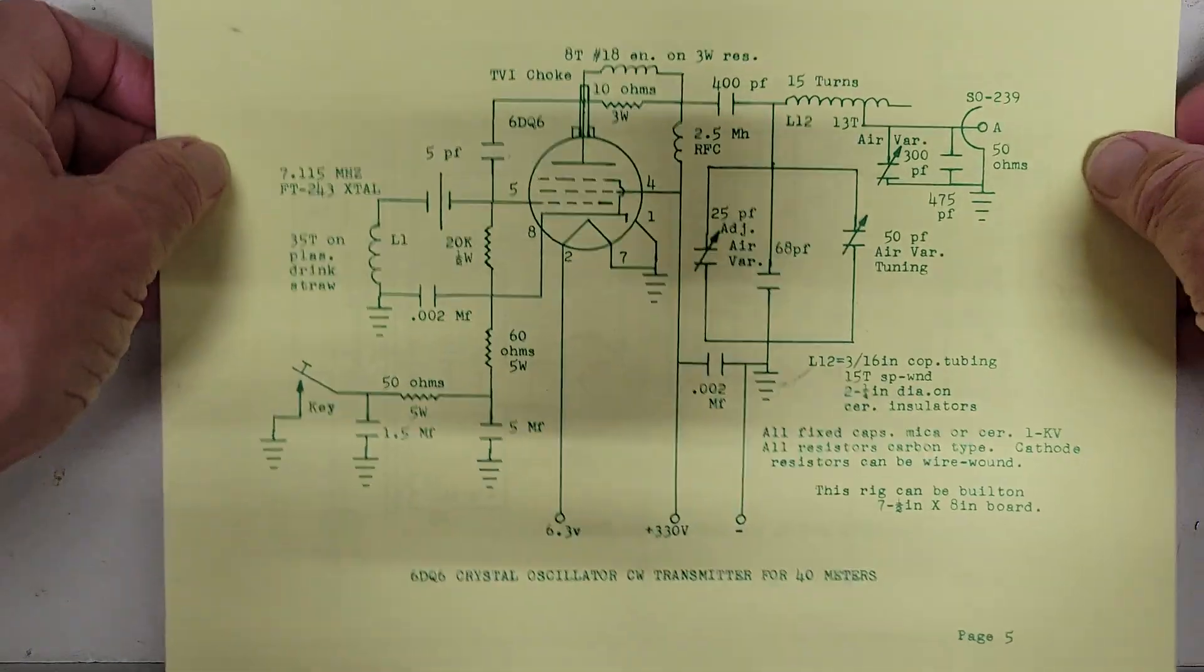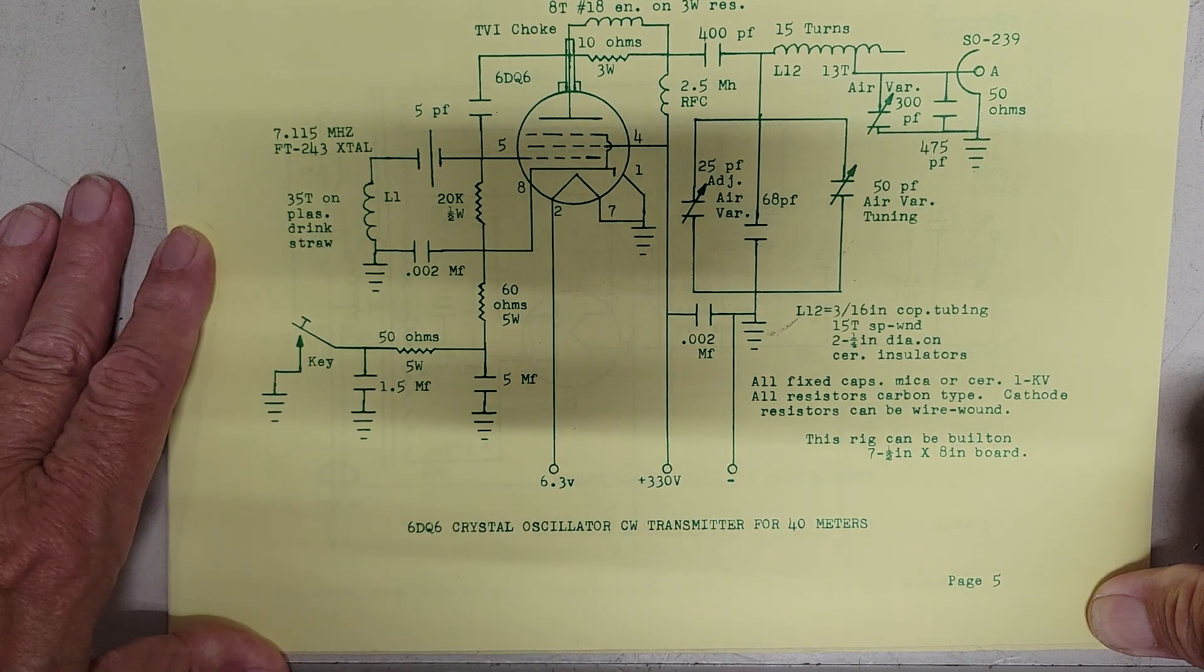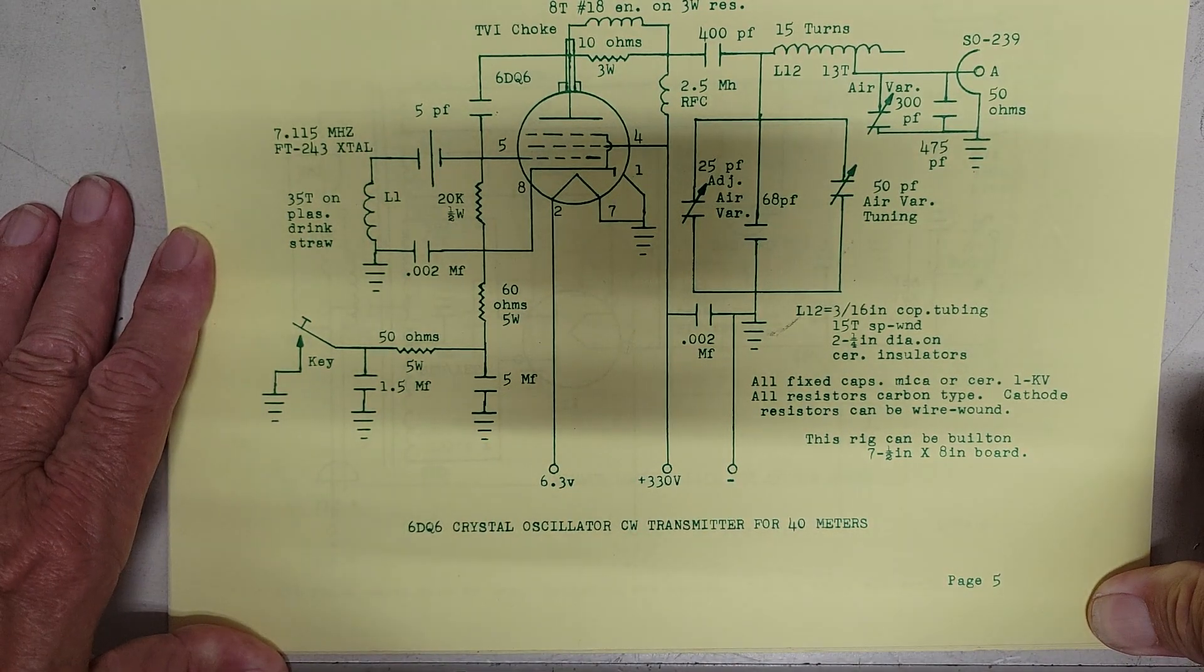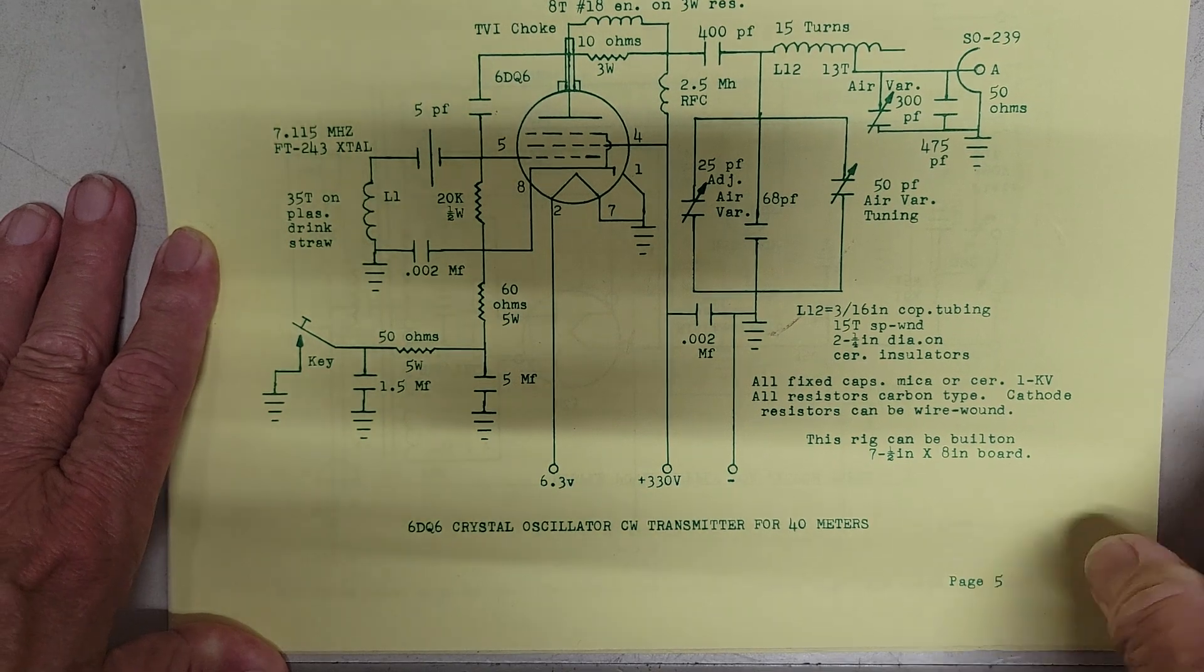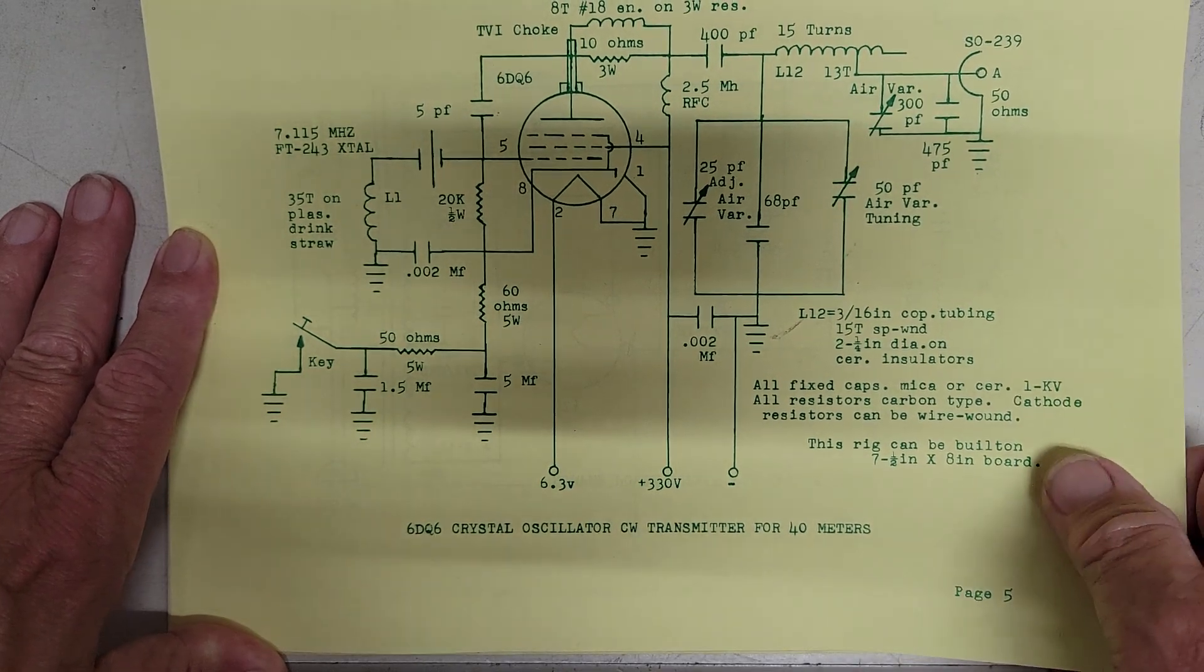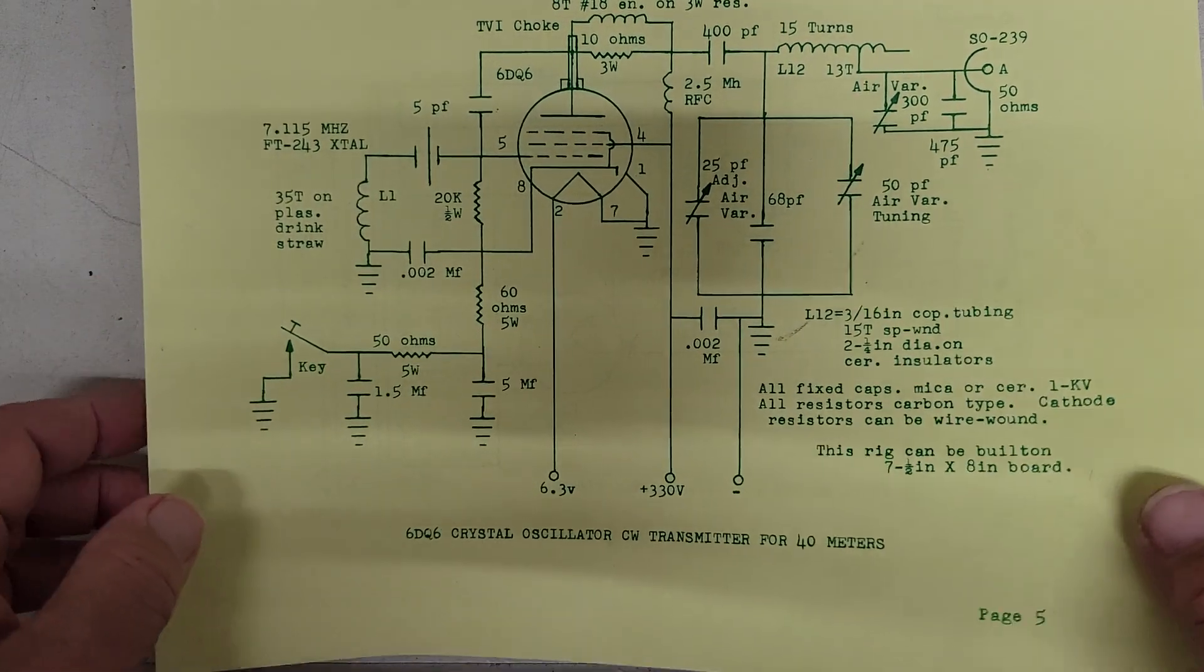Here we have a 6DQ6 crystal oscillator. I believe that's a TV sweep tube. And this is a transmitter, low power, but you can work the world with CW with these things.